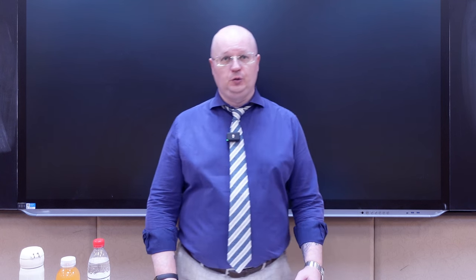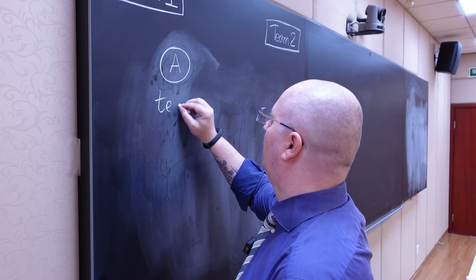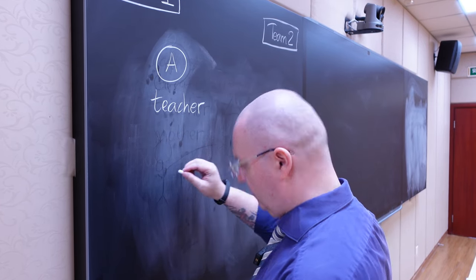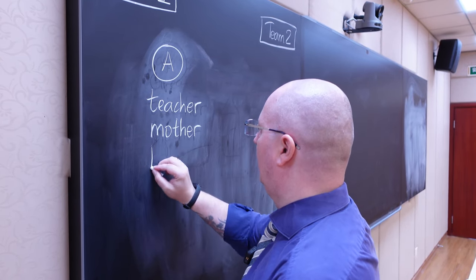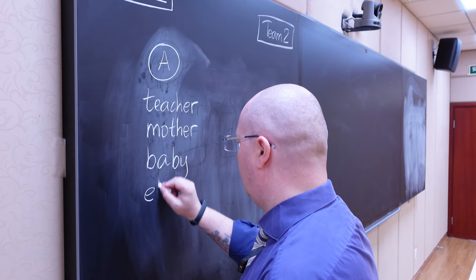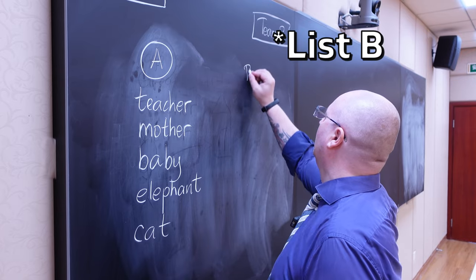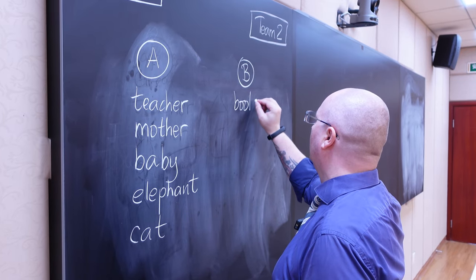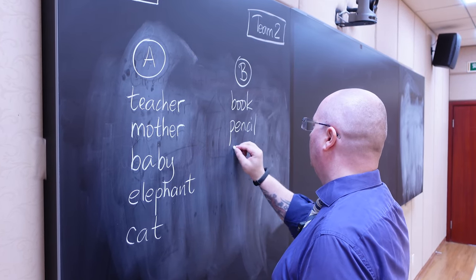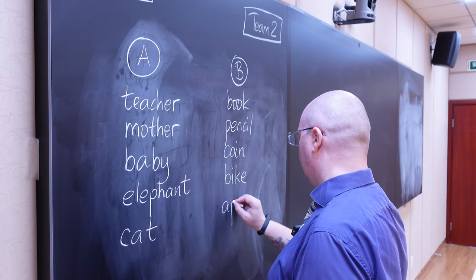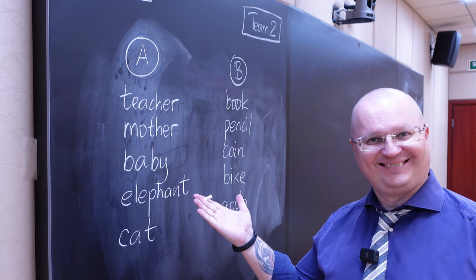Entirely up to you. In my example, in list A I have teacher, mother, baby, elephant and cat. And in list B I have book, pencil, coin, bike and apple.